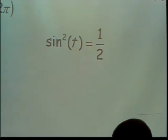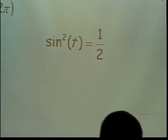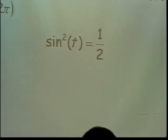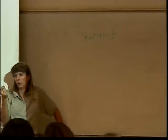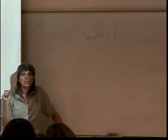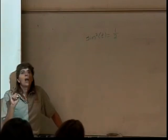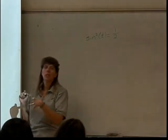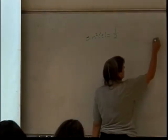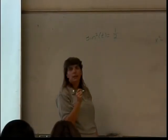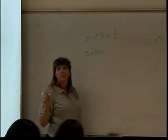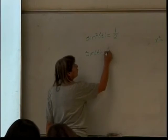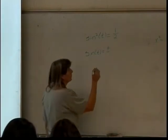I want to solve sine squared of t equals one-half. How do I solve such an equation? So I have sine squared of t equals one-half. If this were x squared equals one-half, what would be your first step? Take the square root of both sides. We'll do that here too. So I'll end up with the sine of t equals plus or minus — really important here, you'll lose half your answers if you forget the plus or minus — the square root of one-half.